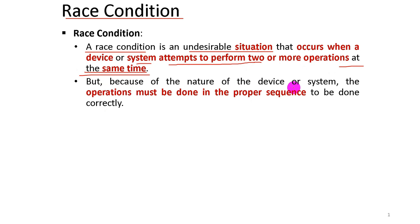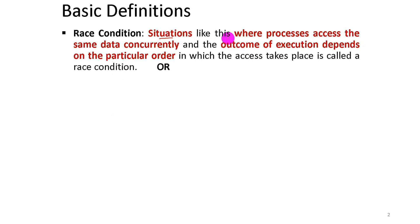Because of the nature of the device or the system, the operations must be done in the proper sequence to be done correctly. In a situation where a process accesses the same data concurrently, the outcome of the execution depends on the particular order in which the access takes place.